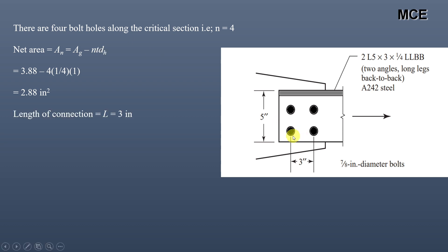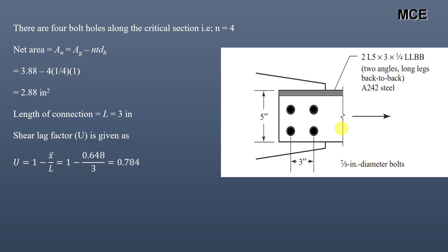The length of connection is 3 inches — that is the distance between the centers of the bolt holes in the direction of the load. The shear lag factor U = 1 − (x-bar / L) = 1 − (0.648 / 3) = 0.784. The effective area = U × net area = 0.784 × 2.88 = 2.26 in².